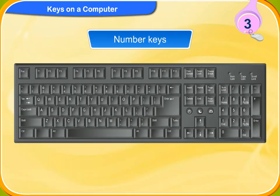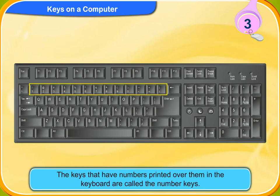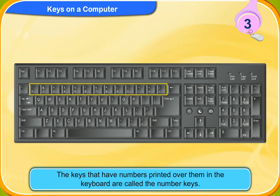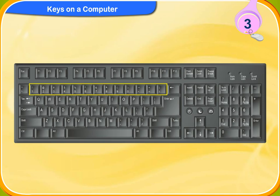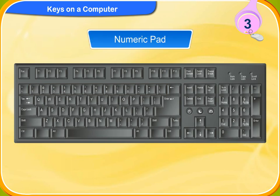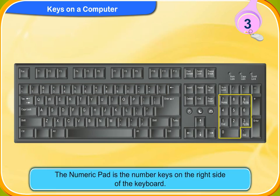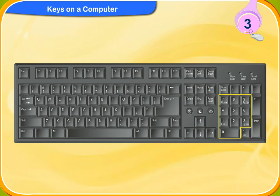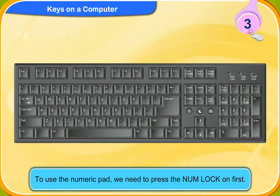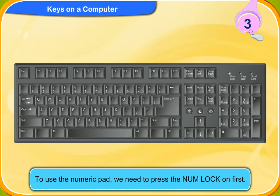What are the number keys? The keys that have numbers printed over them in the keyboard are called number keys. These keys are present on the top row, just above the alphabet keys. The numeric pad is the number key on the right side of the keyboard. To use the numeric pad, we need to press the Num Lock on first.